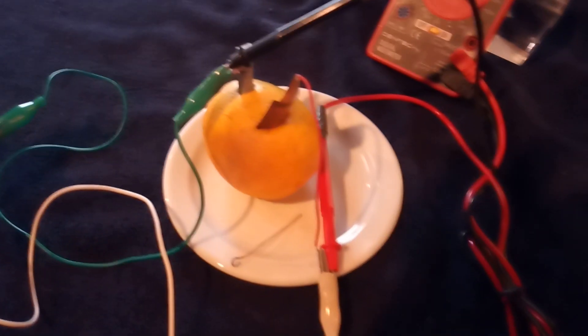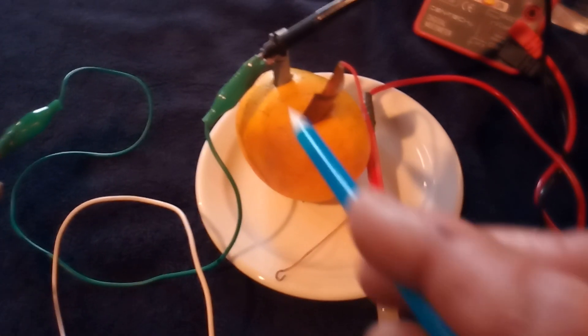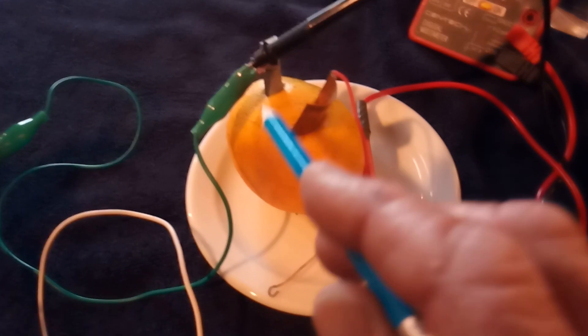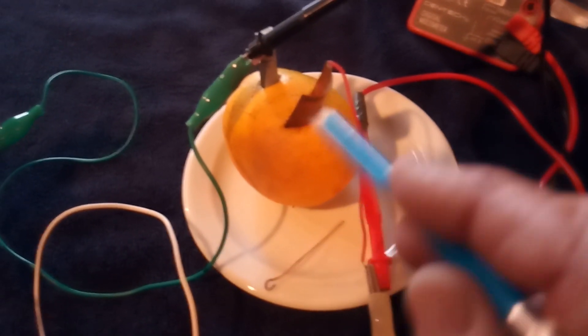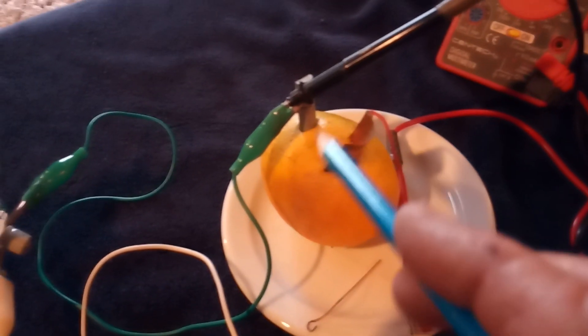On these lemon batteries, if you ever made one, this is a zinc alloy of some kind and this is a copper sheet. If you try to use just a wire you don't have enough surface area. Same thing with the zinc - if you use a nail there's not enough surface area to get the amperage.